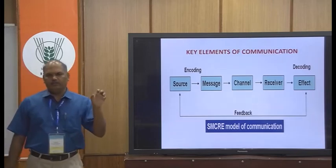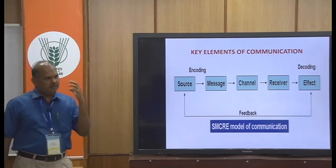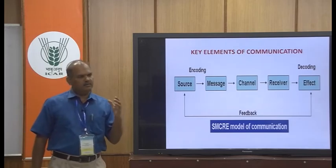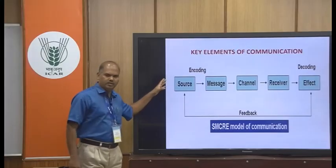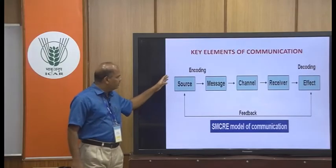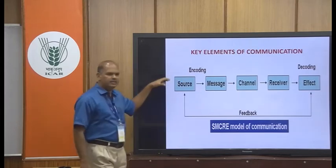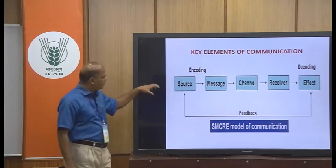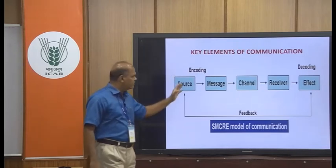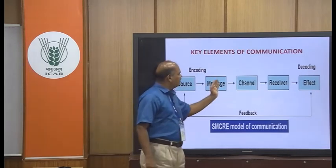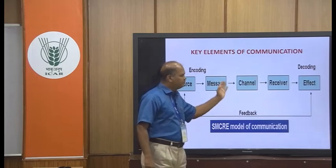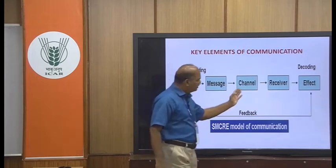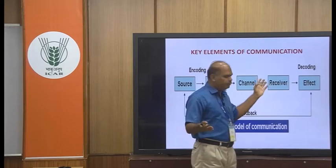For example, a particular point of view — previously we were calling it the radio, and before that it was called a transistor. Transistor is another name for the source. Then what do you mean by encoding? Encoding is the addition of some symbols to the wording of the source messages. Then it passes through the channel. The message passes through the channel using some channels. Then finally it goes to the receiver — that is the audience like you. Then finally, what is the effect? The effect of the message in your mind.